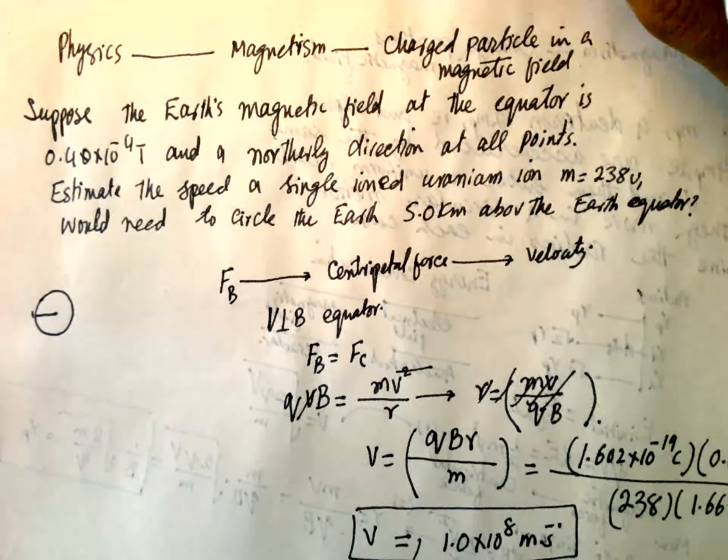Radius is the same as the radius of Earth but just 1 km addition, so this will not make a difference. 6.385 into 10 power 3 km or 10 power 6 meter. Divide by mass. Mass is equal to 238 atomic mass unit, 1.66 into 10 power minus 27 kg. And this will give you the velocity which is equal to 1.0 into 10 power 8 meter per second.